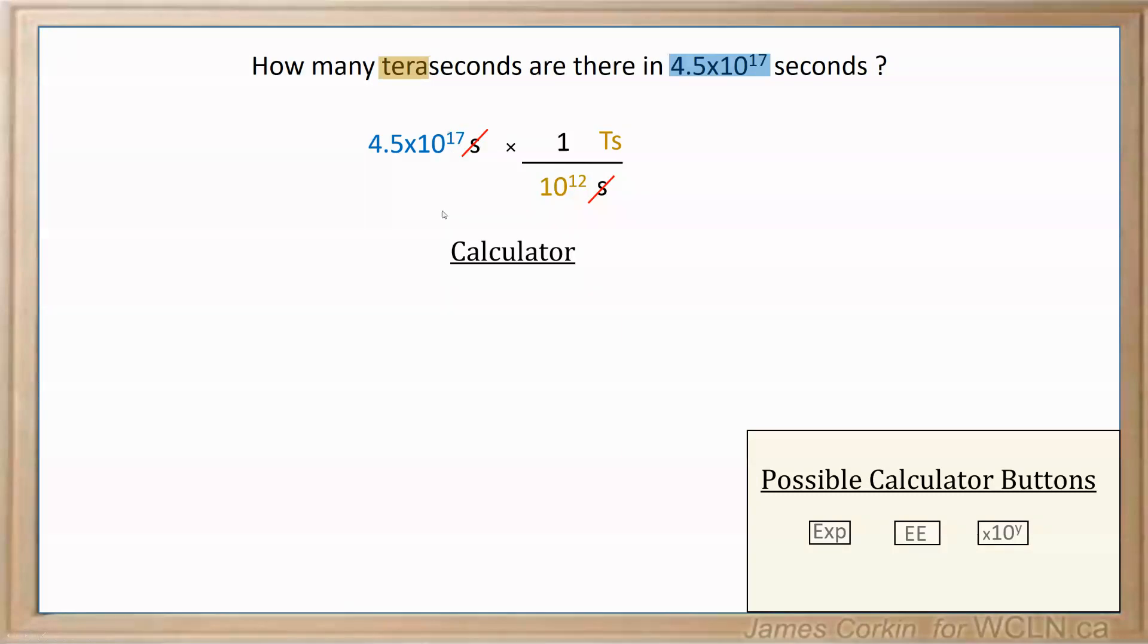So this value's in scientific notation, so to put that in a calculator you would put in the 4.5, you would hit your EXP button, and then you put the power. So the EXP takes the place of the times 10 in any scientific notation.